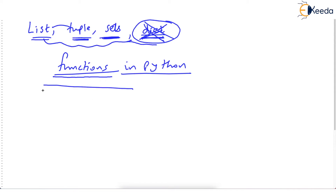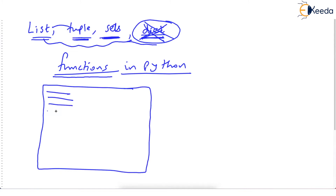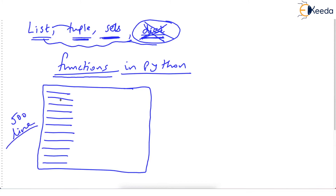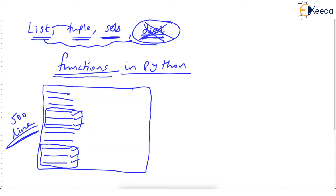Just imagine we have written a program containing several statements — imagine it's a 500-line program. As a programmer, you observe that these three lines are exactly the same lines you have written elsewhere. Absolutely no difference between them. But you are typing them again. Imagine these three lines have been written 50 times at various places in this 500-line code. Obviously as a programmer, you will get irritated — you are writing the same lines of code again and again. You know these lines do the same job, but you need them in many places. And then you get the idea of a function.